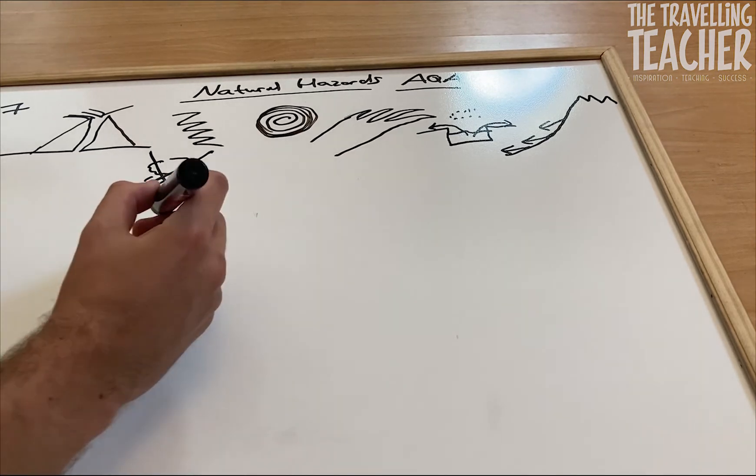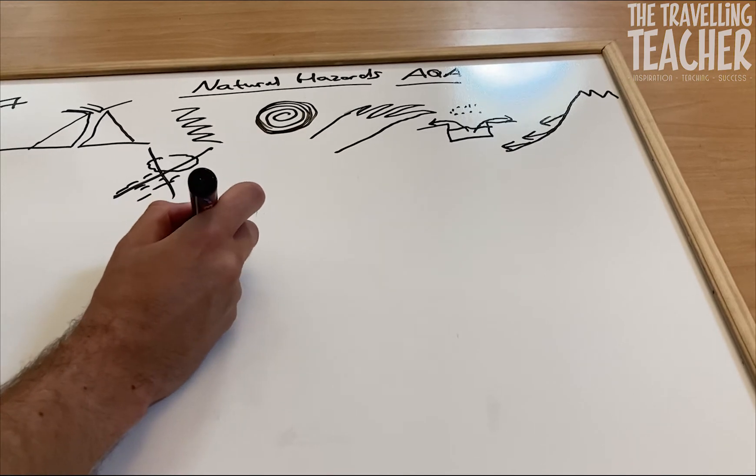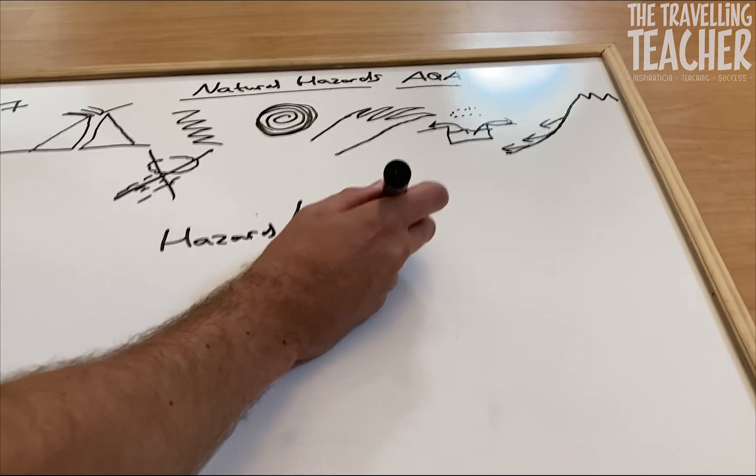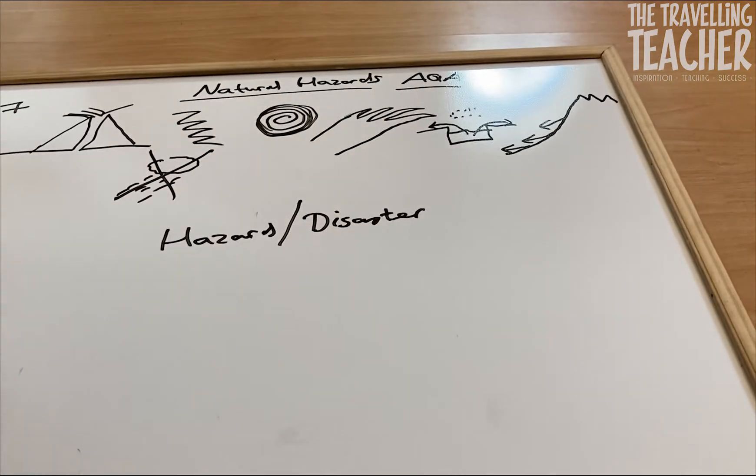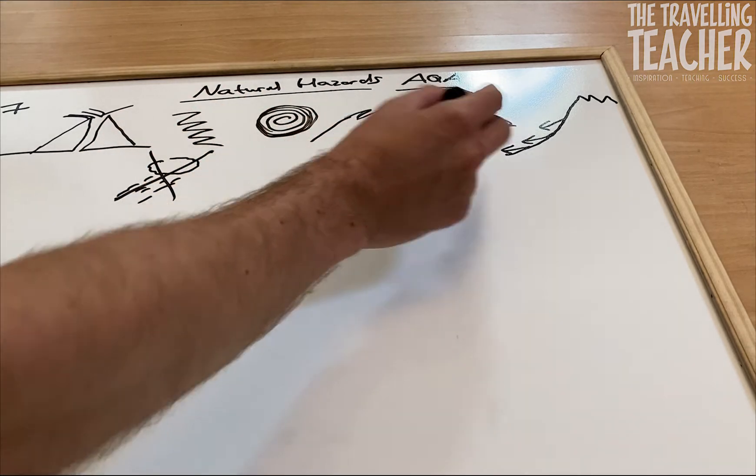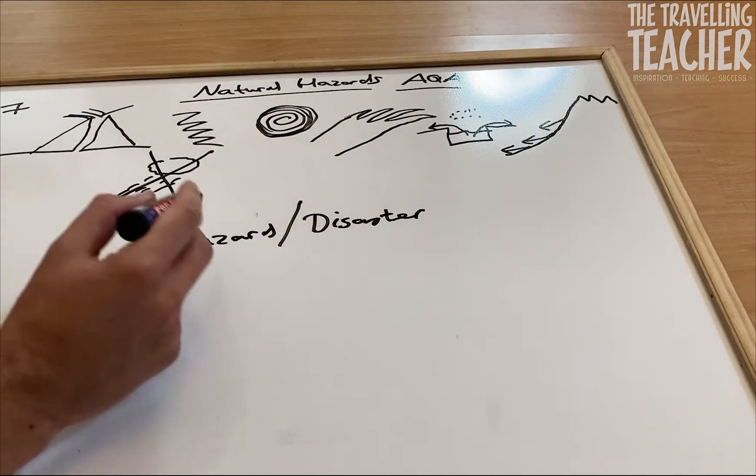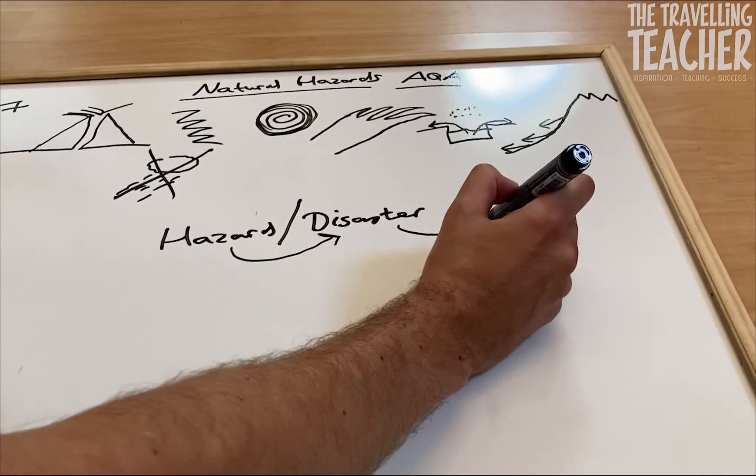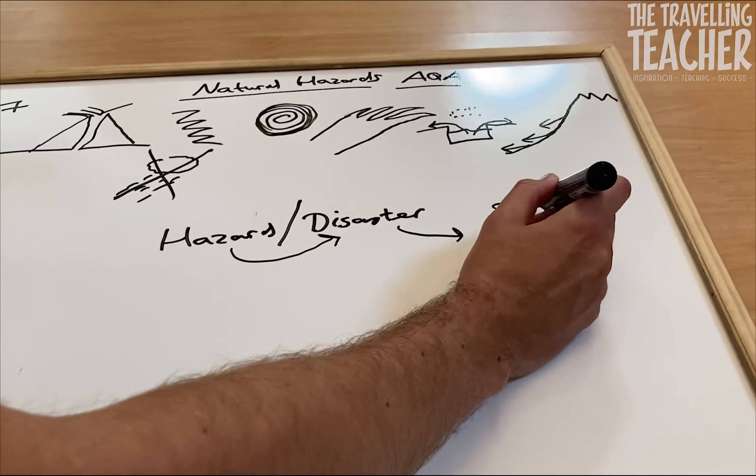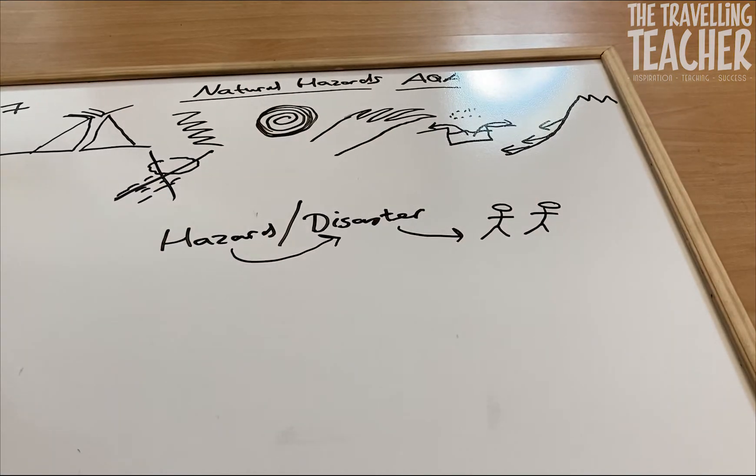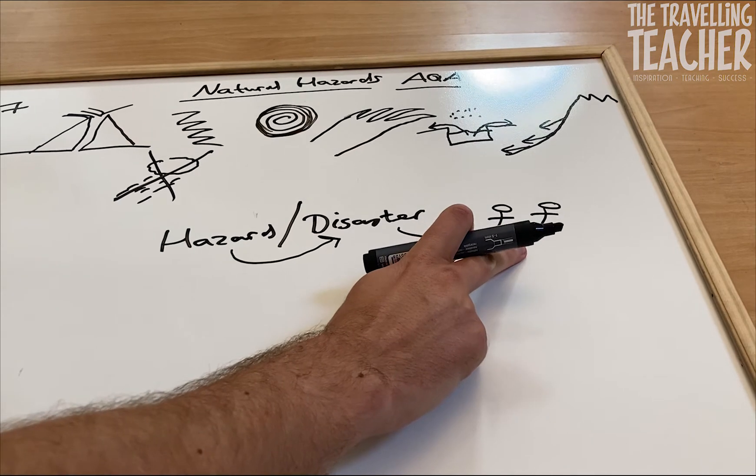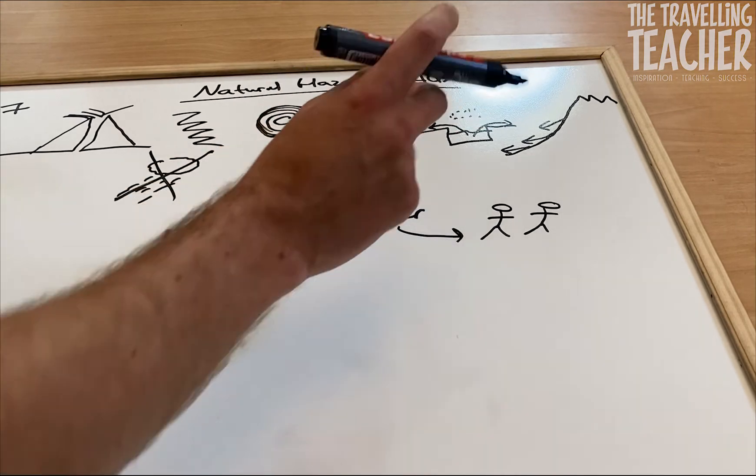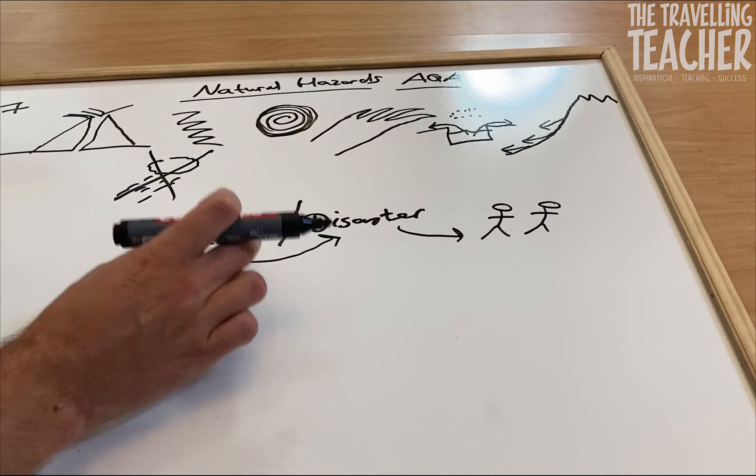The next thing we're going to look at is the difference between these two words: hazard and disaster. Now these seven hazards which I've gone through they only become a disaster when the population of that area is impacted.